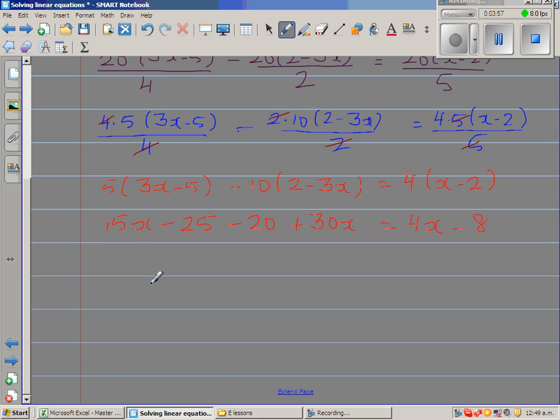Let me simplify the left-hand side. This is 15x plus 30x, grouping the like terms. Minus 25 minus 20 equals 4x minus 8.